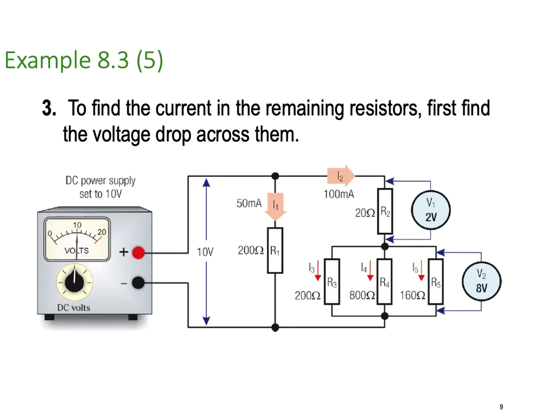Next we need to find the current in the remaining resistors, so first find the voltage across them. If we know the current, we're going to be able to work out the voltage. We know that I2 is 100 milliamps. And again, let's just go back to our good old Ohm's law, volts equals R times I. Here we've got 20 Ohms multiplied by 0.1 and it equals 2 volts.